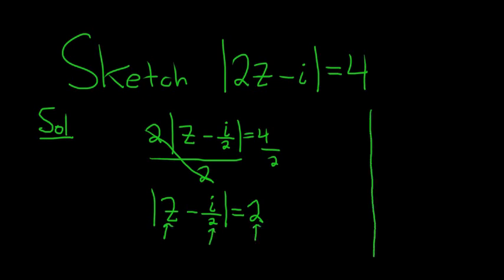If we graph it, let's be really careful here. Say this is i over 2. It's all of the complex numbers that are a distance of 2. If I go up 2 units,